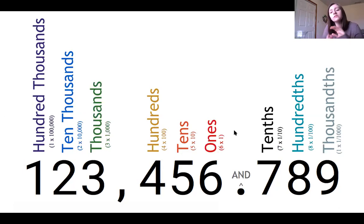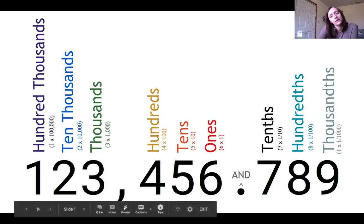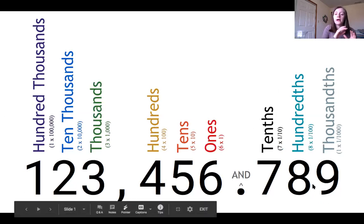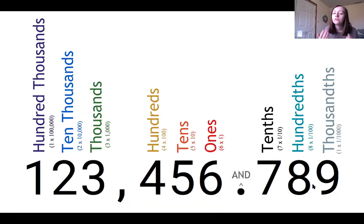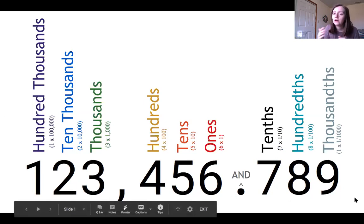But it's a little bit different for decimals because decimal values are less than one — they're less than a whole number. So to find the value of a decimal number like that, we have to multiply it by a fraction. What that means is for the tenths place, you're multiplying it by one tenth, or one over ten. For the hundredths place, you're multiplying it by one over one hundred, or one hundredth. And for the thousandths place, it's one over one thousand, or one one-thousandth.